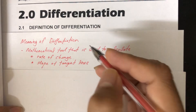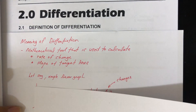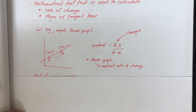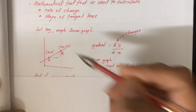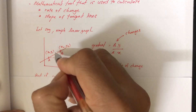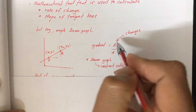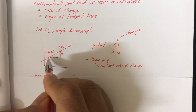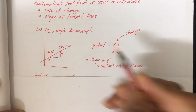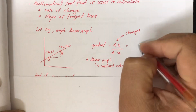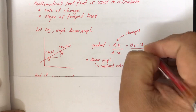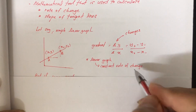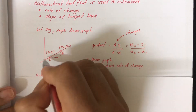We're going to see what is meant by rate of change and slope of tangent lines. Let's say we have a simple linear graph from point A to point B. If you want to find the gradient here, between point A and point B, we have to find the changes — delta Y divided by delta X. So if A is (X1, Y1) and B is (X2, Y2), the gradient is equal to Y2 minus Y1 divided by X2 minus X1.